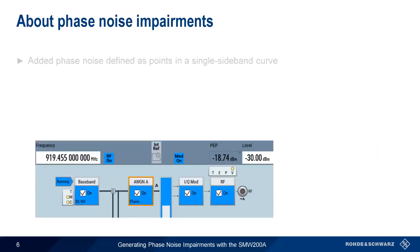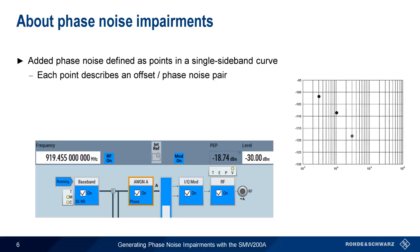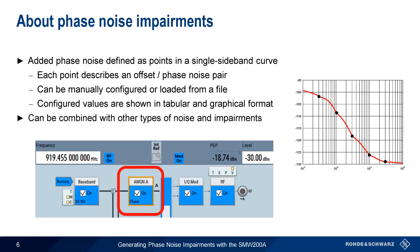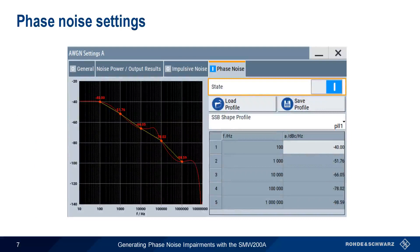On the SMW-200A, we define the added phase noise as a series of points that create a single sideband curve. Each point in this curve is a combination of a frequency offset and the level of phase noise at that offset. These values can be configured manually by the user or loaded from a file containing user-defined or predefined values. Values are shown as both a graph and in an editable table. Phase noise impairments are added in the AWGN block of the SMW, and it's possible to combine phase noise impairments with other types of impairment or noise. The Phase Noise Settings screen is found under the AWGN block. On the right, we have a table showing the offsets from the carrier in hertz and the phase noise at those offsets in dBc per hertz.